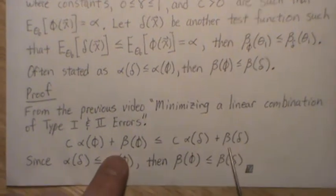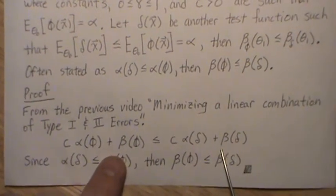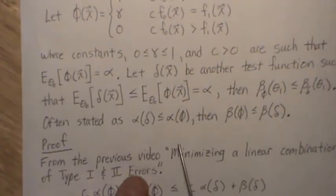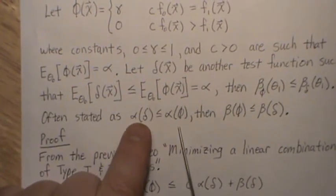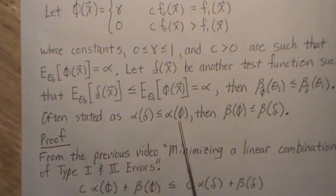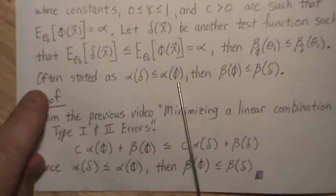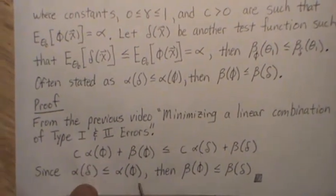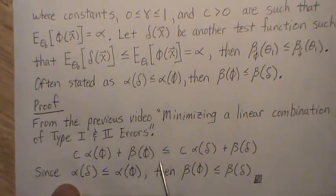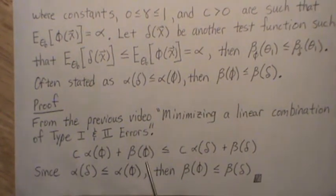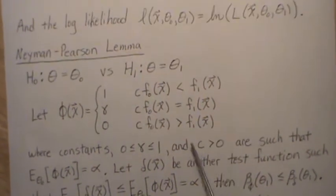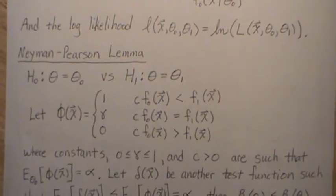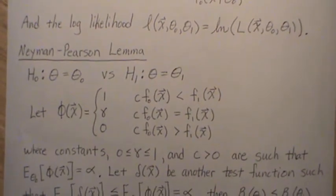Now that was proven in the previous video, but in this video we're assuming that the size for delta is less than or equal to the size for phi. And so since this is less than this, then it ensures that beta of phi is less than or equal to beta of delta, and we're finished. And so the Neyman-Pearson lemma when set up like this creates a most powerful test.